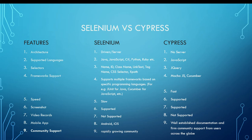Number one: Architecture. Selenium's architecture is based on a driver or server — we need a JAR file when building a Selenium framework. The driver works as a middle server between your script and the browser. Cypress, on the other hand, doesn't need any server; the script talks directly to the browser.